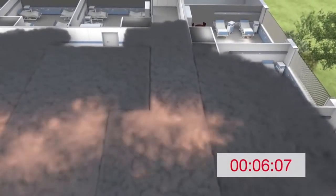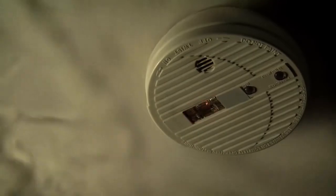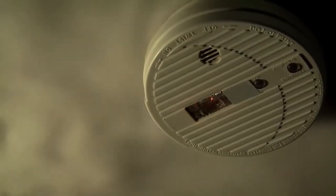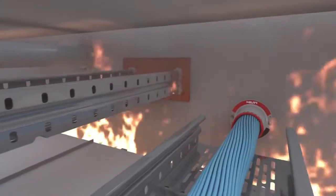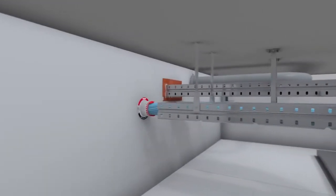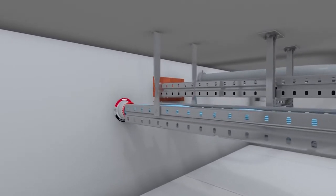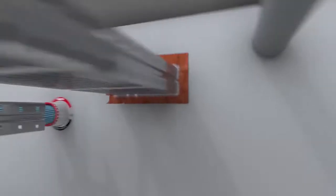The keys to effective fire protection are both active protection such as detectors and sprinklers, but also passive protection. Passive means that penetrations in walls and floors have been sealed with approved fire stop products. This principle is called compartmentation.